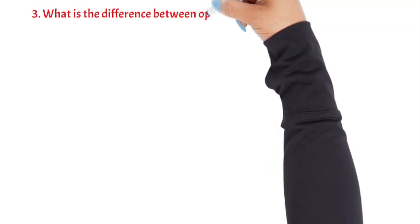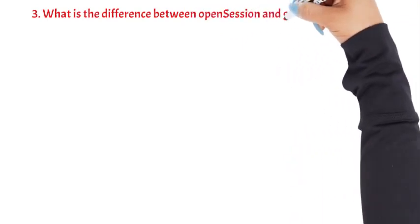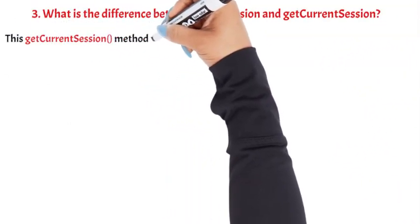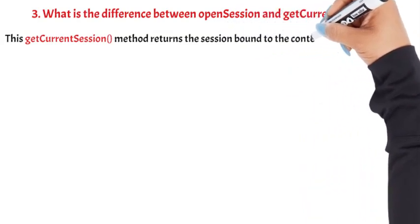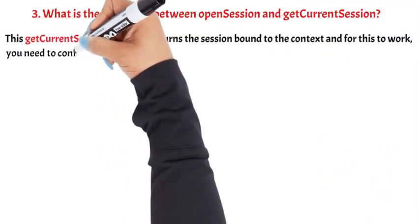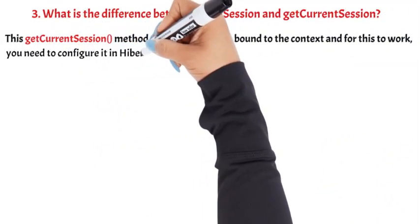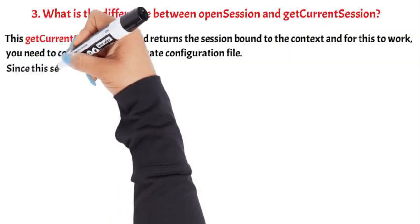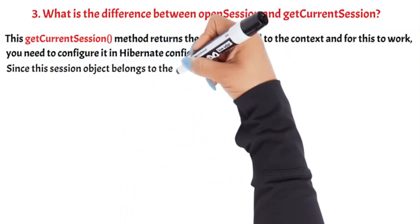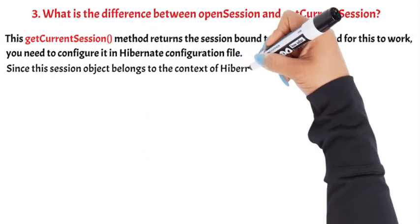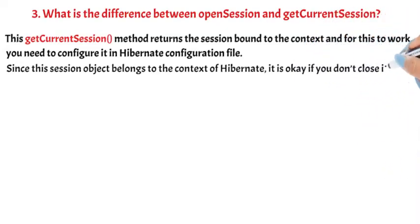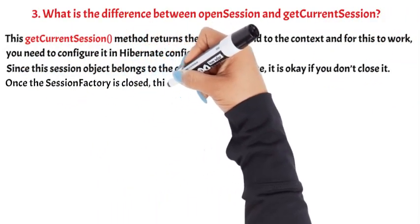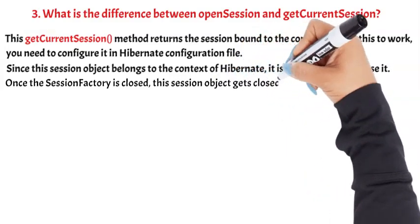Question 3: What is the difference between Open Session and Get Current Session? The Get Current Session method returns the session bound to the context, and for this to work, you need to configure it in the Hibernate configuration file. Since this Session object belongs to the context of Hibernate, it is okay if you don't close it. Once the Session Factory is closed, this Session object gets closed.